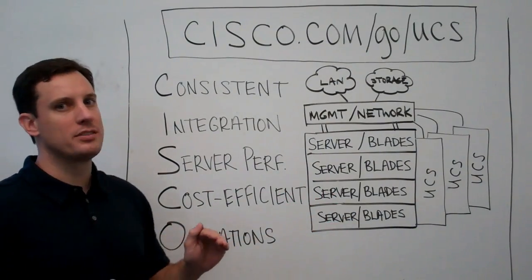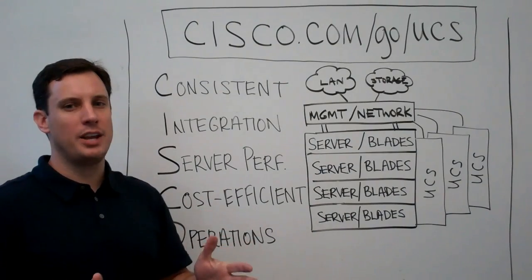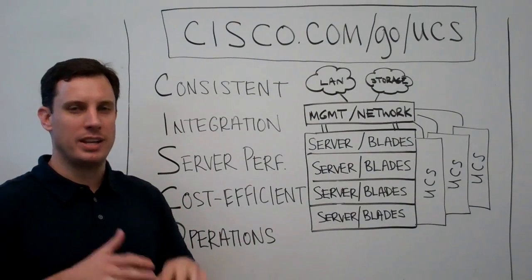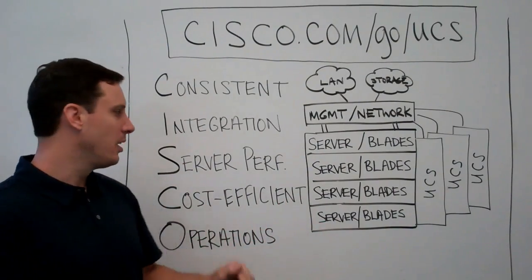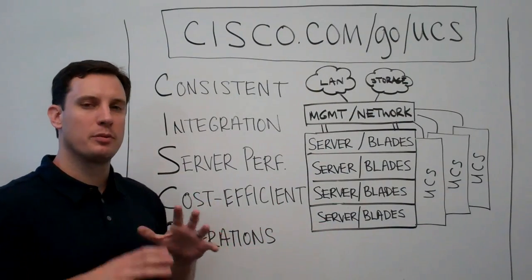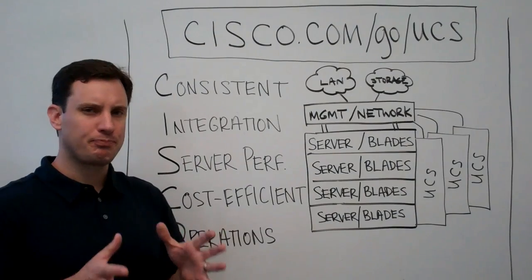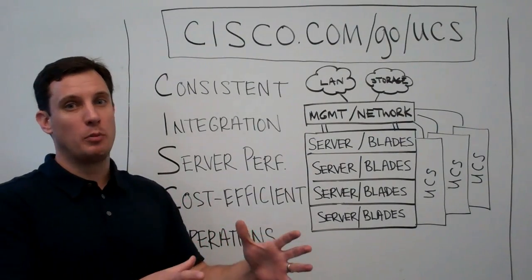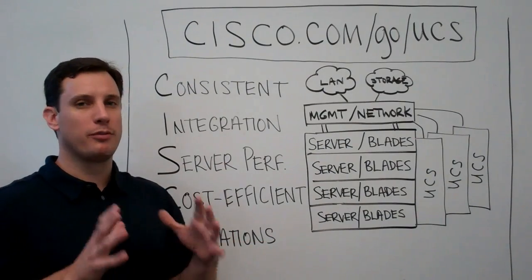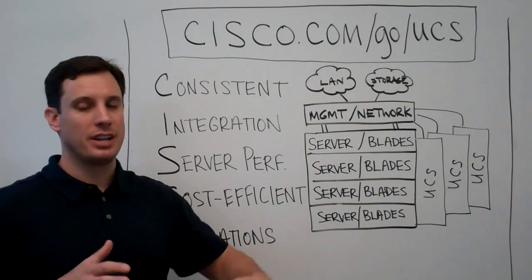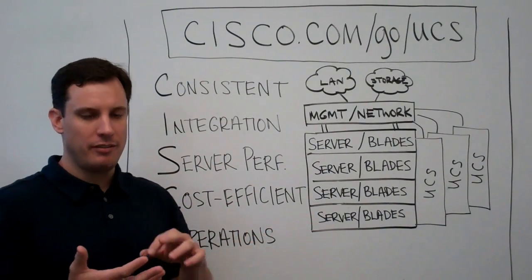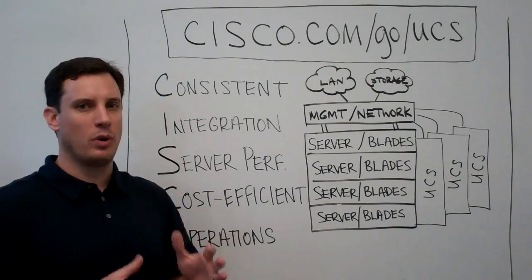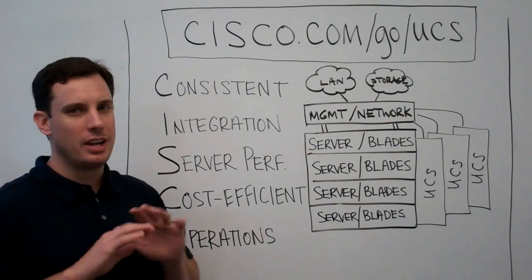The third thing is server performance. When customers talk about their applications, they've got to run highly available and as fast as possible — they need to deliver information and applications to their users. Cisco's unique server application architecture built on Intel chipsets has delivered world-record performance: 40 world-record performances over the last couple of years across every application type — VMware, Oracle, Microsoft, SAP — all the critical things your customer wants. Best server performance in the industry.